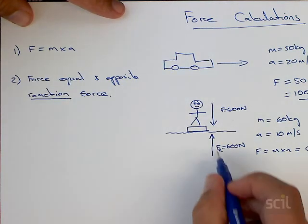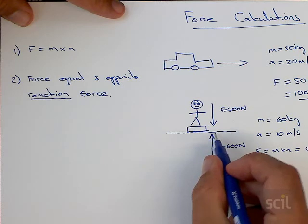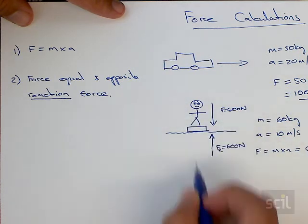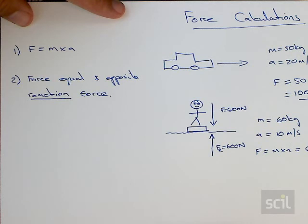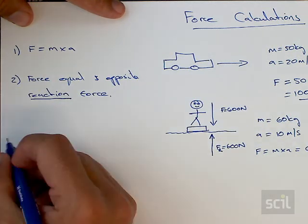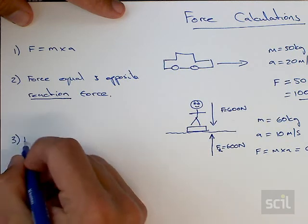This force is often prescribed with an R because it is a reaction force. If it wasn't for this reaction force, her weight force would cause the girl and the set of scales to travel down through the ground. This reaction force keeps the system in equilibrium.